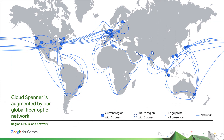Of course, none of this would be possible without Google Cloud's very own global fiber optic network. This is the backbone of multiple Google Cloud products and is part of the secret sauce that goes into creating such unique and powerful databases like Spanner. As this network improves, more undersea cables are added, and more regions pop up, you can expect to see improvements in things like latency and reliability in Spanner.